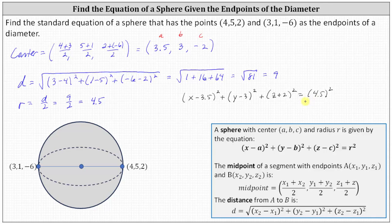The final form of the equation is: (x - 3.5)² + (y - 3)² + (z + 2)² = 20.25. Either of these two forms should be acceptable.